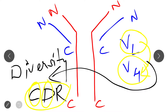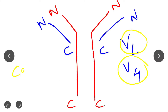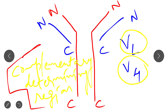CDR stands for Complementary Determining Region. This complementary determining region is nothing but the small restricted part of both the variable light chain and variable heavy chain, restricted to three small regions.